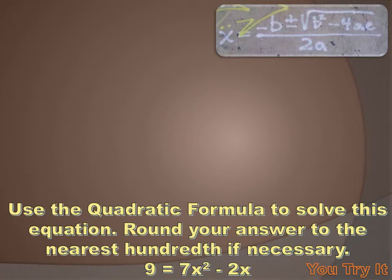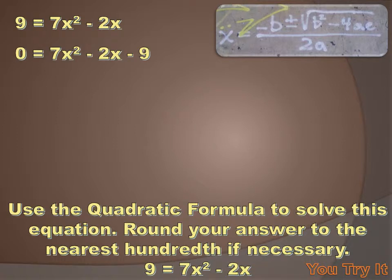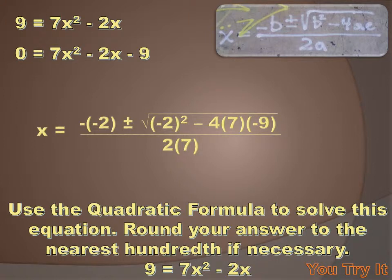We're asked to find the solutions to the equation 9 equals 7x squared minus 2x. That's not in standard form, so I'll rewrite it as 0 equals 7x squared minus 2x minus 9. So 7 is my a value, minus 2 is my b value, and minus 9 is my c value. I plug it into the quadratic formula and get x equals minus minus 2 plus or minus the square root of minus 2 squared minus 4 times 7 times minus 9 over 2 times 7. You're going to notice there's a whole bunch of negatives here, and if you make a mistake, it's frequently because you don't deal with the negatives properly.